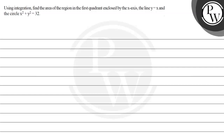Hello! Let's read the question. Using integration, find the area of the region in the first quadrant enclosed by the x-axis, the line y equals x, and the circle x squared plus y squared equals 32.